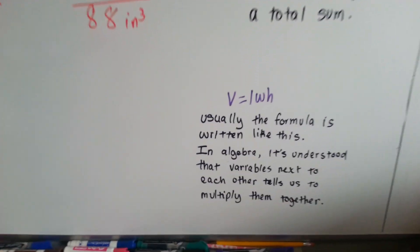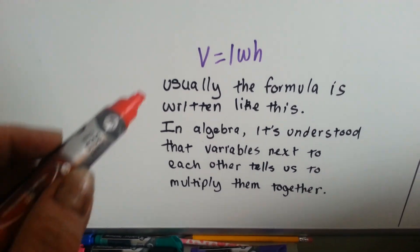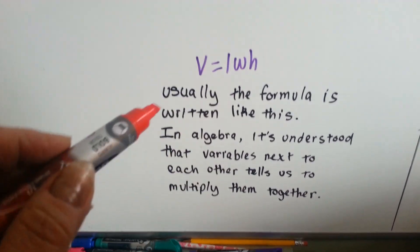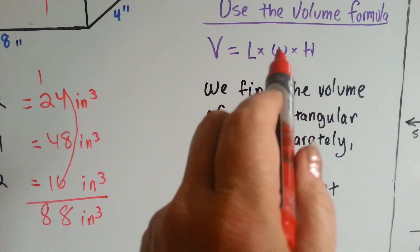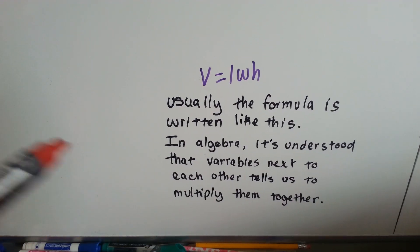Now, as you're ending 5th grade and going into big 6th grade math, I wanted to show you something. The volume formula is usually written as V equals LWH. We don't have the little multiplication symbols in between them. That's math for little kids.